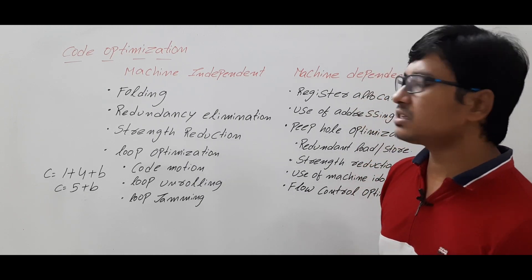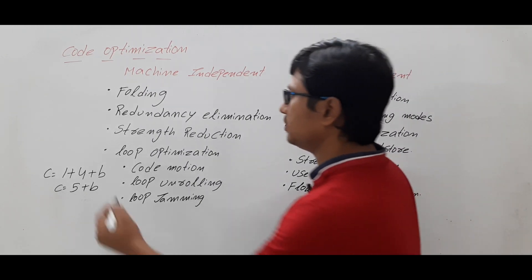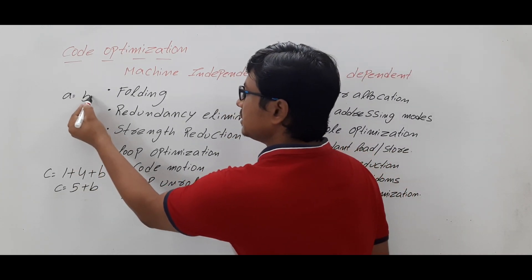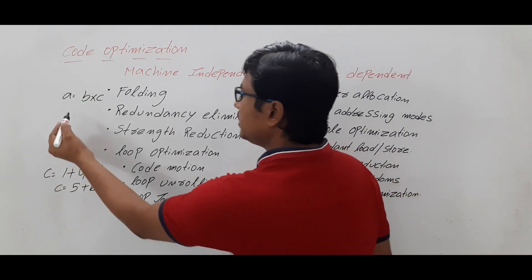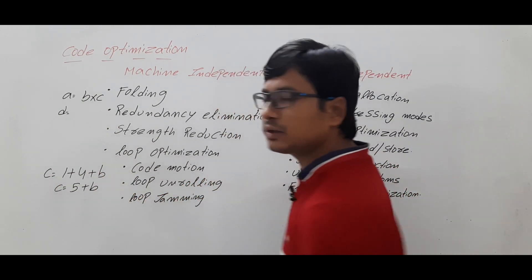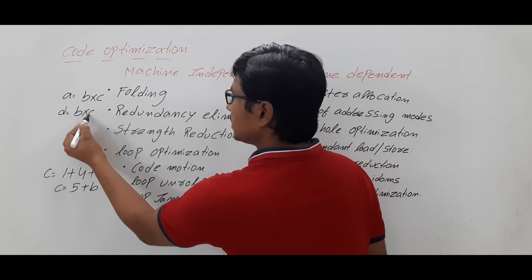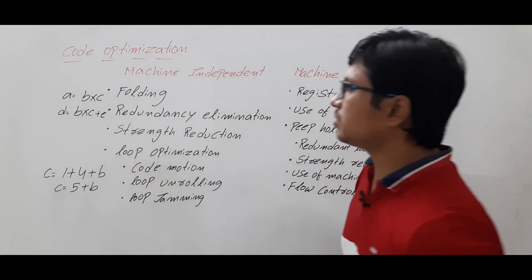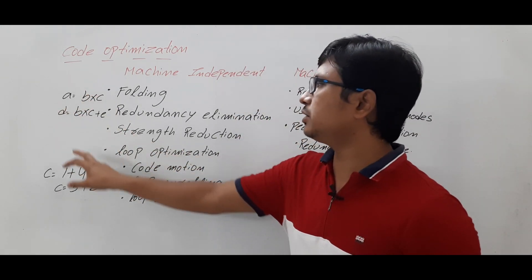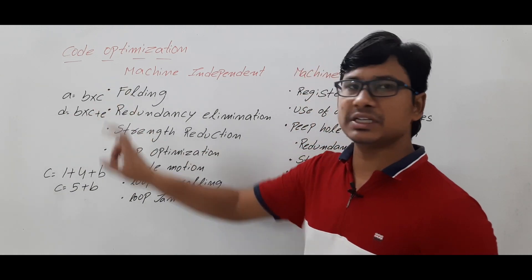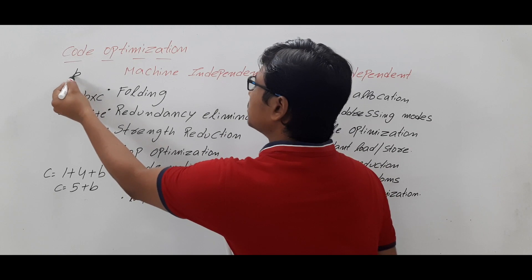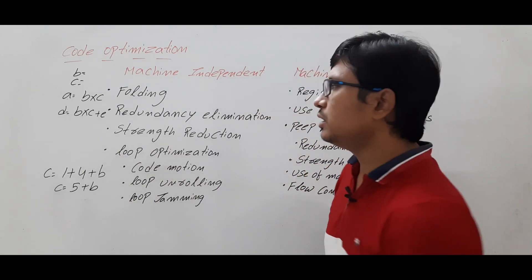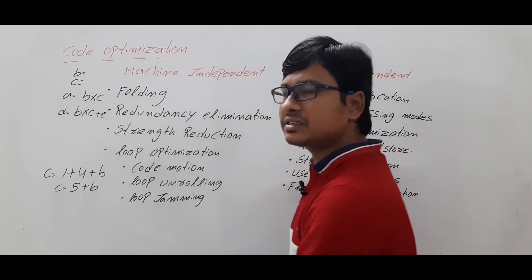Now let me discuss about redundancy elimination with a simple example. Suppose you have written A is equal to B into C, and then D is equal to B into C plus E. So the expressions are: A = B*C and D = B*C + E.